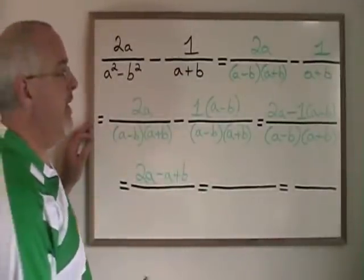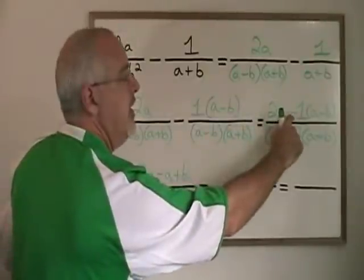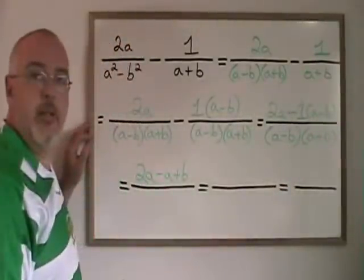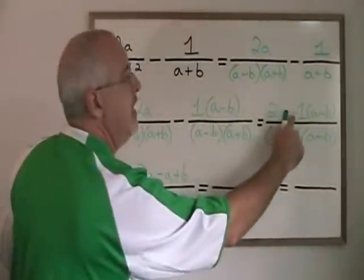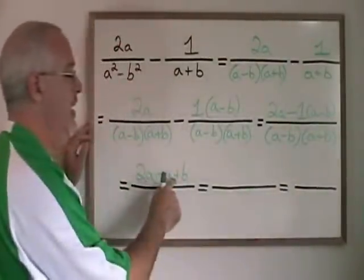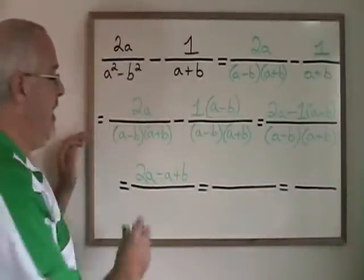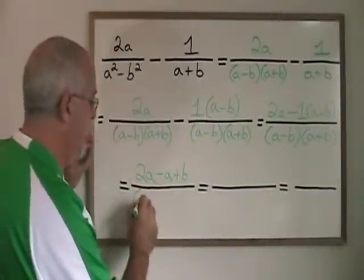Again, be very careful about the minus sign before the expression at the end. The entire expression is being subtracted. So this ends up meaning minus minus b is equal to plus b. It's still over the common denominator.